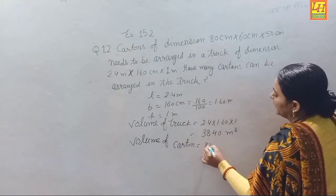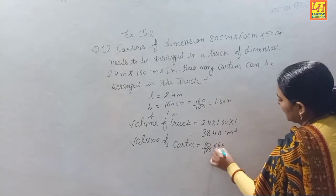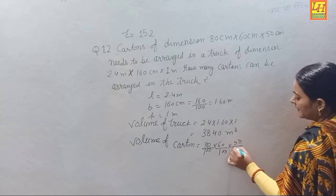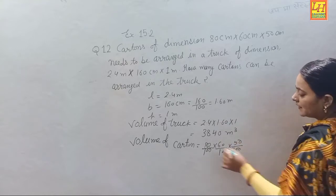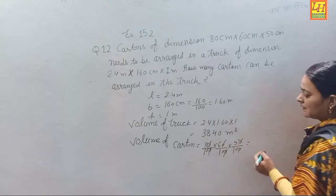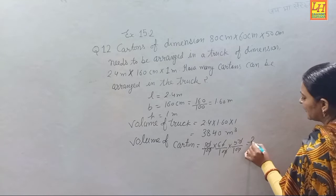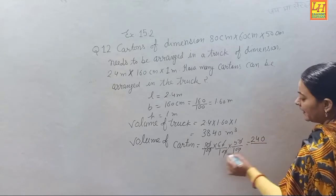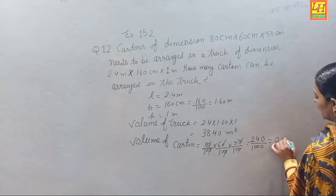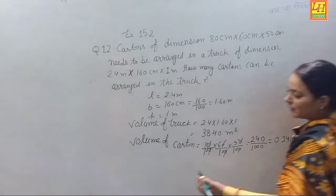Volume of cartoon is equal to (80/100) × (60/100) × (50/100). Calculating: 0.80 × 0.60 × 0.50 = 0.240 cubic meters.